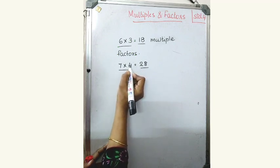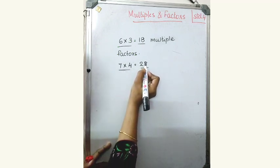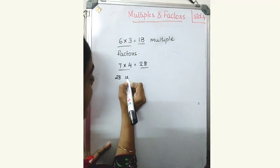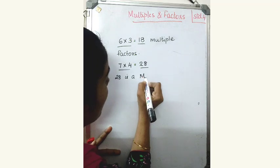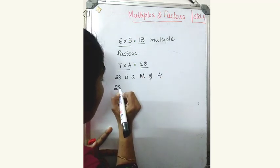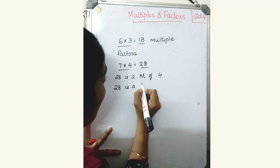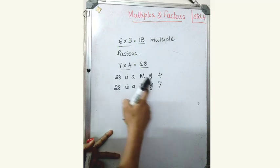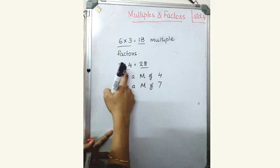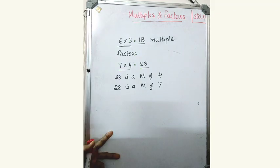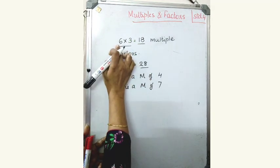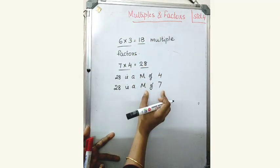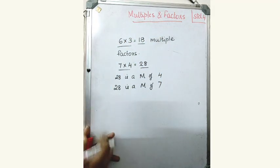28 is a multiple of 4. 28 is a multiple of 7. This means 4 is multiplied by 7, we get 28. 7 is multiplied by 4, we get 28. Here 18 is a multiple of 6. 18 is a multiple of 3 also. So this part is a multiple and this part is a factor.